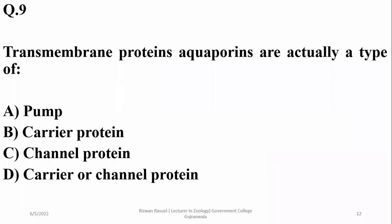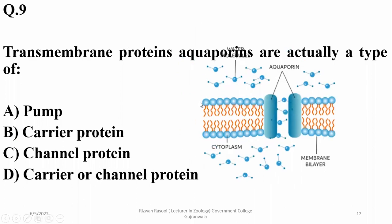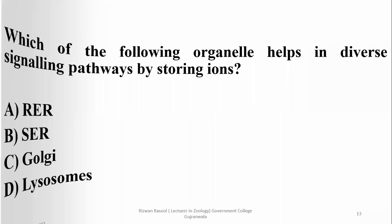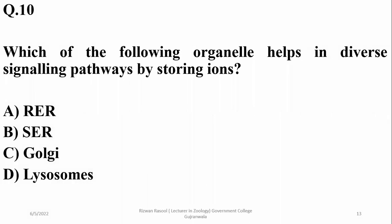Question 9: Transmembrane proteins called aquaporins are responsible for the transfer of water across cells. They are a type of transmembrane protein and are classified as channel proteins — either carrier or channel proteins. Right option is channel proteins.